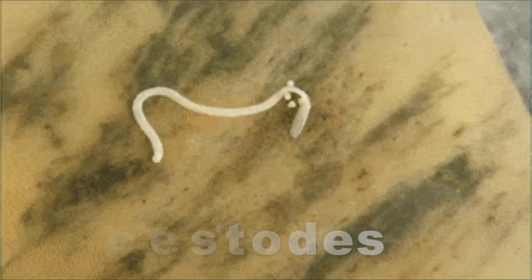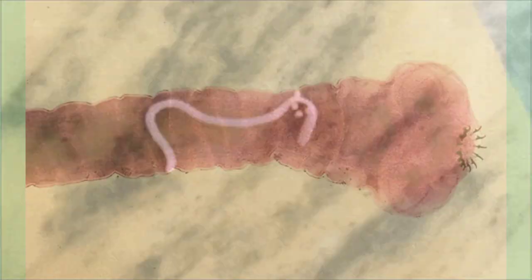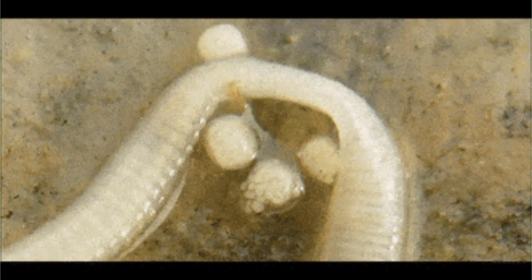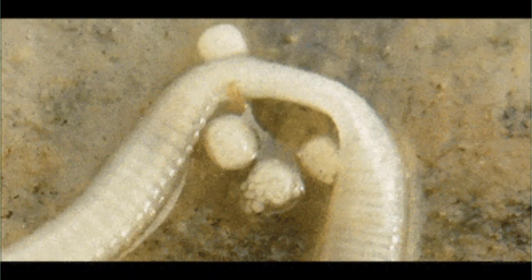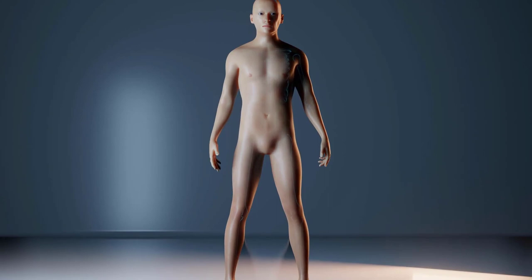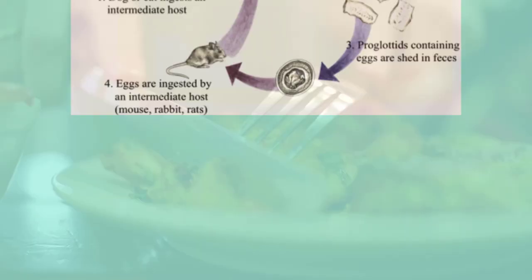The other group of flatworms is the cestodes, which includes the tapeworms. These parasitic worms have a head region called the scolex and a ribbon-like body consisting of segments called proglottids. The proglottids most distant from the scolex are filled with fertilized eggs; as the proglottids break free, they can spread eggs. Tapeworms generally live in the intestines of a host organism, where they are bathed by nutrient-rich fluid from which they absorb food already digested by the host. Tapeworms have adapted to a parasitic existence and lost their intestines, but still retain well-developed muscular, excretory, and nervous systems. Tapeworms require at least two hosts, and humans often become infected by eating undercooked meat containing tapeworm cysts, which then develop into mature adult worms.